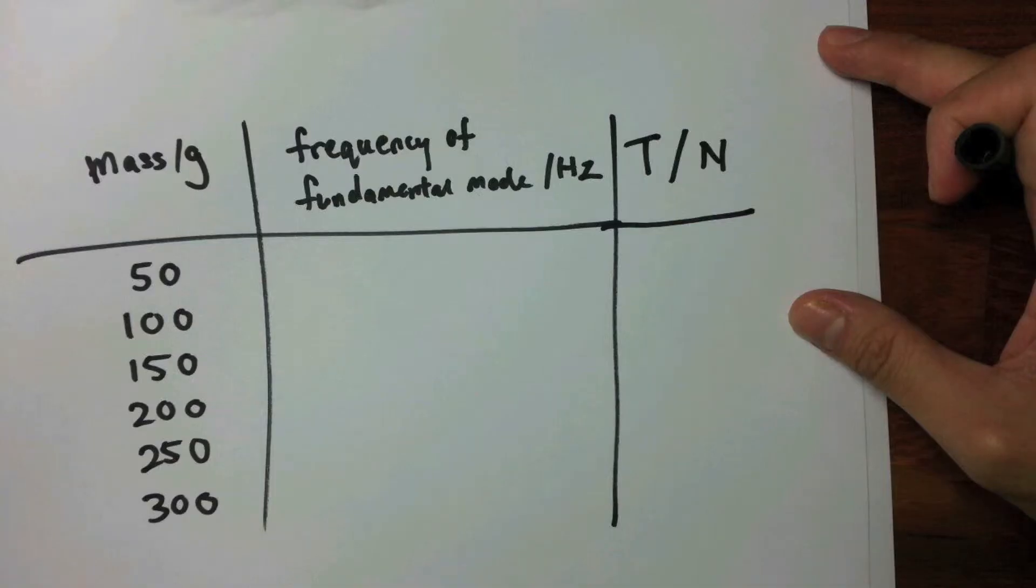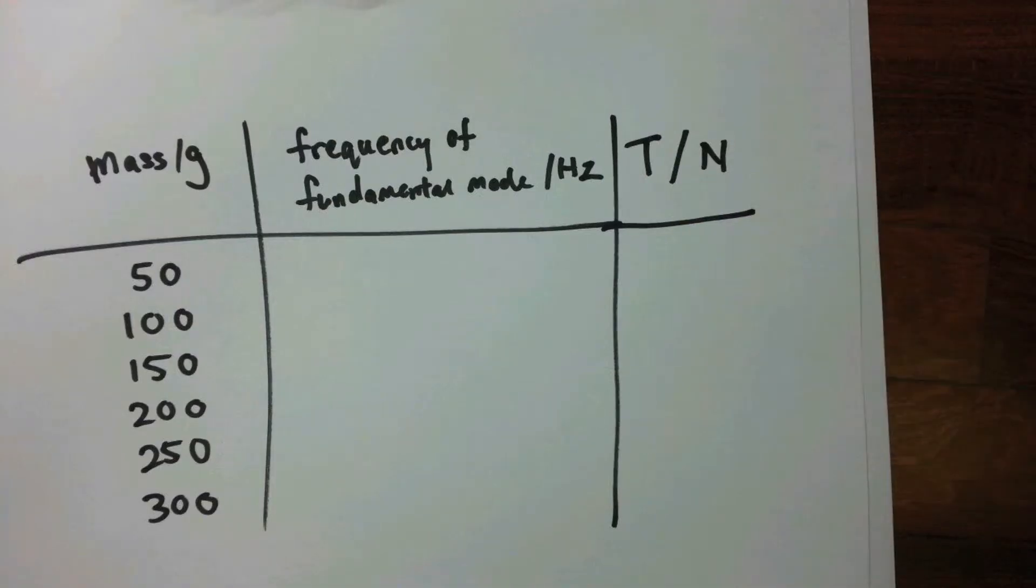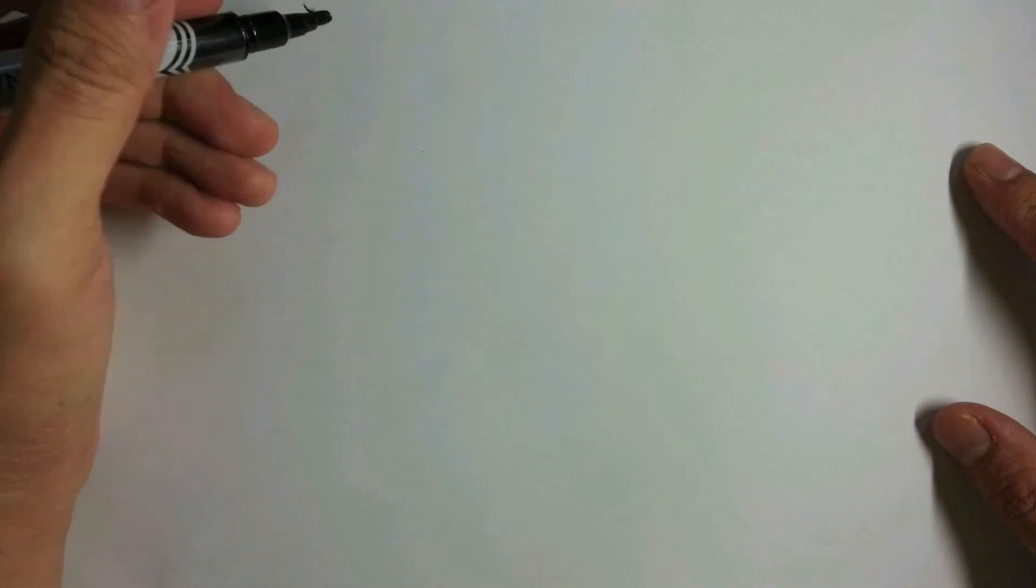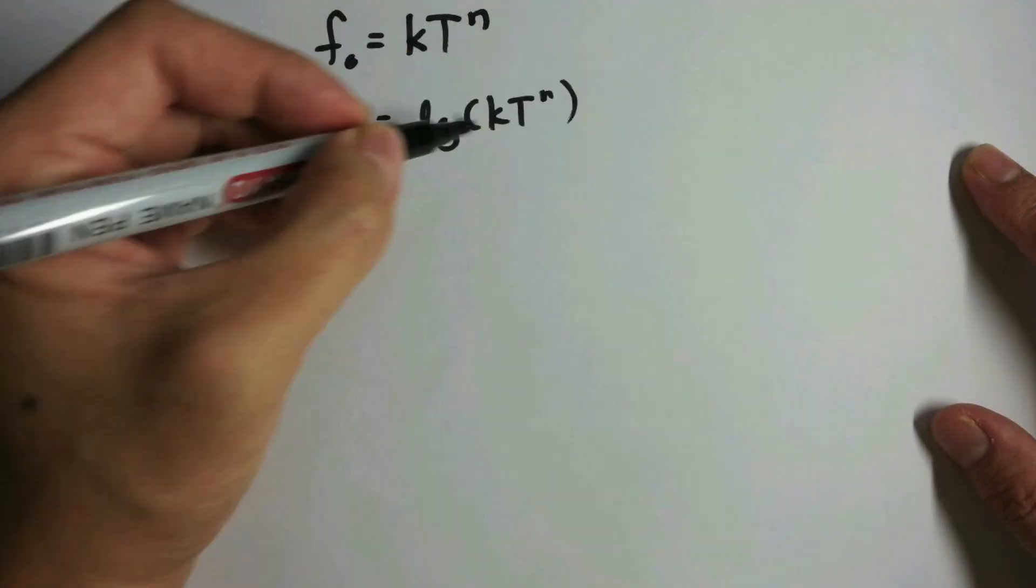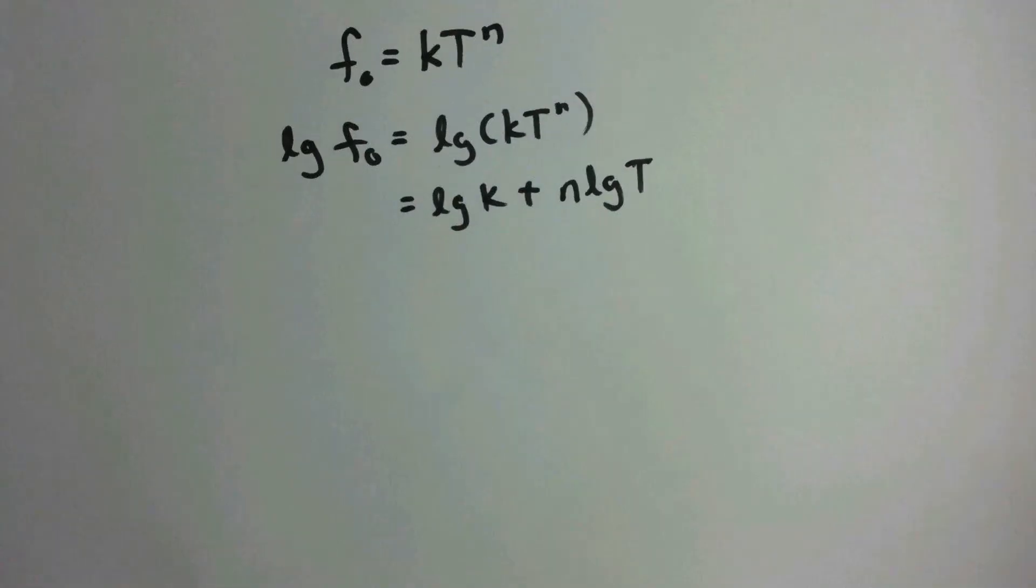The tension in the wire is then calculated using the equation T equals mg. Assume that the resonant frequency of the fundamental mode F0 and the tension T follows the equation F0 equals k times T to the power n, where k and n are constants. Then taking log on both sides, log F0 equals log k plus n times log T.